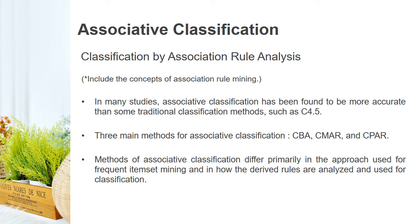Next is associative classification — classification by association rule analysis. It includes the concepts of association rule mining, including frequent itemset mining and rule generation. In many studies, associative classification has been found to be more accurate than some traditional classification methods such as C4.5, which is a decision tree method. There are three main methods for associative classification: CBA, CMAR, and CPAR. These methods differ primarily in the approach used for frequent itemset mining and in how the derived rules are analyzed and used for classification.